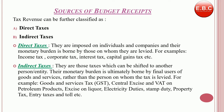Tax revenue can be further classified as direct tax and indirect tax. Direct taxes are those imposed on property and income of individuals and companies, and their burden cannot be shifted to another person or entity. They directly affect the income level and purchasing power of people and help to change the level of aggregate demand in the economy. These taxes are commonly known as income tax, corporate tax, interest tax, capital gains tax, etc.